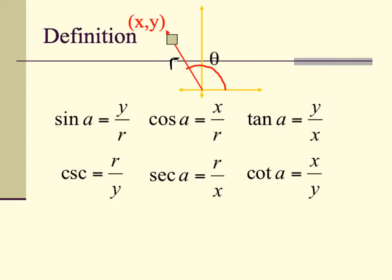Occasionally we deal with angles not on the unit circle — where the radius is other than 1. We go through the same process, but now we incorporate our radius r. Sine becomes y over r, cosine becomes x over r, and tangent remains y over x since it's just the ratio of sine over cosine. The reciprocal functions flip accordingly: cosecant is r over y, secant is r over x, and cotangent is x over y. These adjustments only apply when r is not 1.